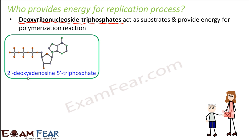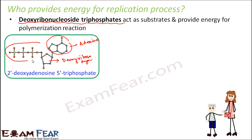So this is the structure of deoxyribonucleoside triphosphate. It is not only adenosine — the base can be anything. Here you can see the deoxyribose sugar, the base (in this case adenine), and the triphosphate portion. This triphosphate stores a lot of energy in its bonds, and this energy gets released during hydrolysis. That is the energy which is provided during the polymerization reaction.